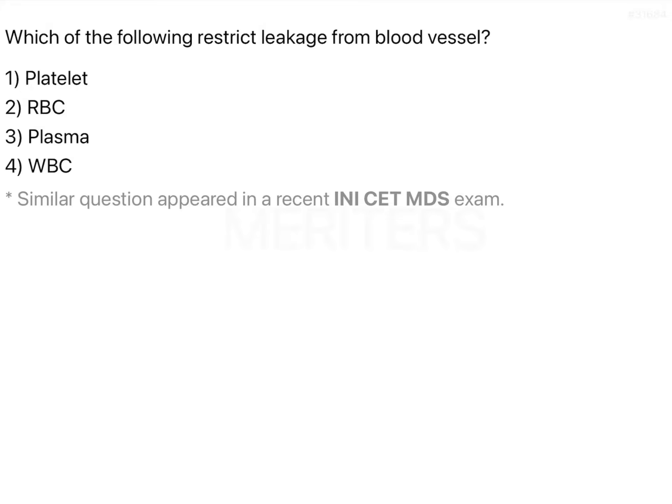Which of the following is strict leakage from blood vessels? The options are platelet, RBCs, plasma, and WBCs.